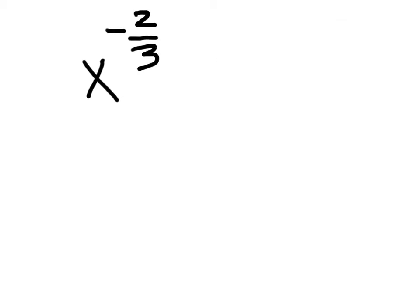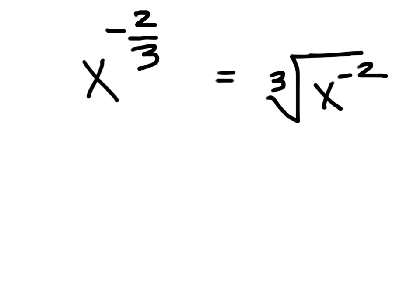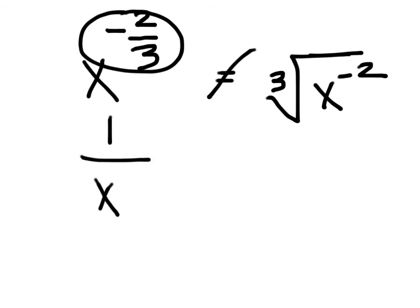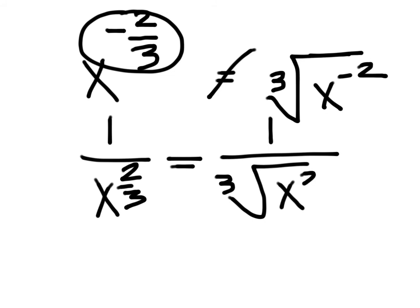The next problem is x to the negative two-thirds power. First, rewrite as the third root of x to the negative second. Then, handle the negative exponent: flip it to get one over x to the two-thirds, which becomes one over the third root of x squared.